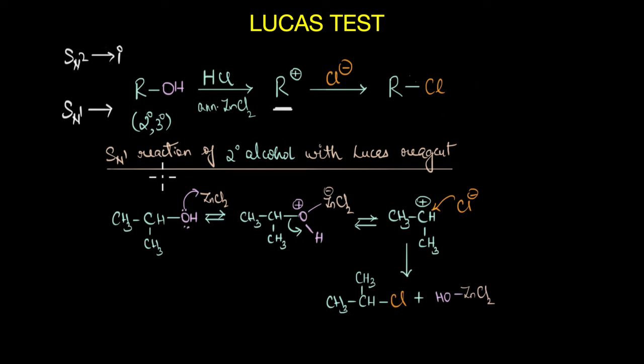Now if you look at the SN1 reaction of secondary alcohol with Lucas reagent, you can see that the first step is essentially the coordination of oxygen atom with zinc chloride. So here it forms a very good leaving group. And as the leaving group leaves we get a secondary carbocation here. Now our nucleophile which is a chloride ion attacks this secondary carbocation giving us the final alkyl chloride.